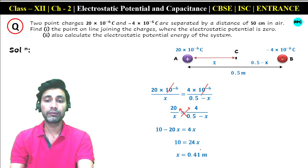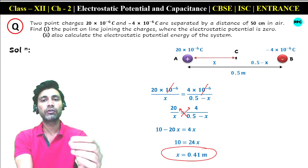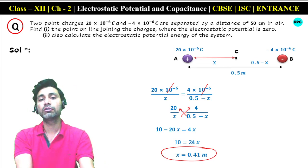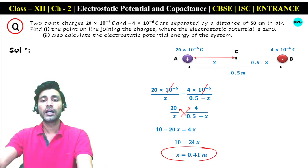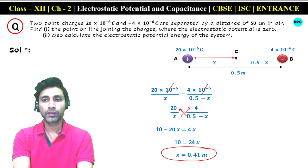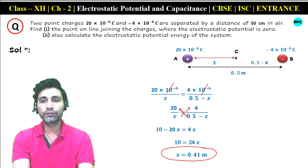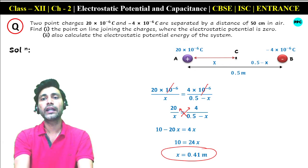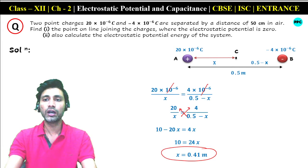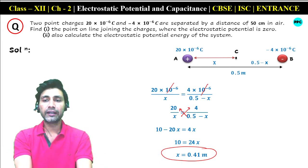So the value of X is approximately 0.41 meter. Point C is located 0.41 meter to the right of point A, where the charge 20×10⁻⁶ coulomb is placed — and it is between points A and B.